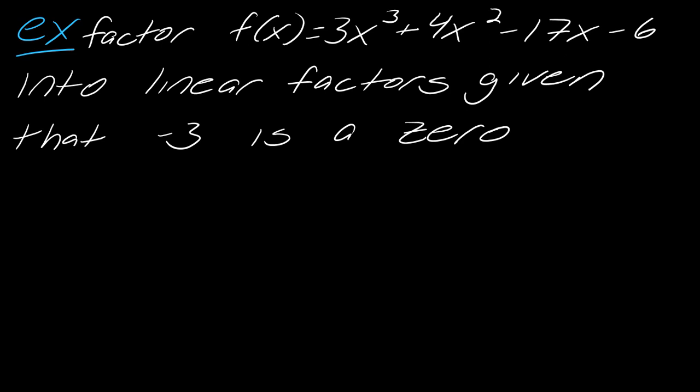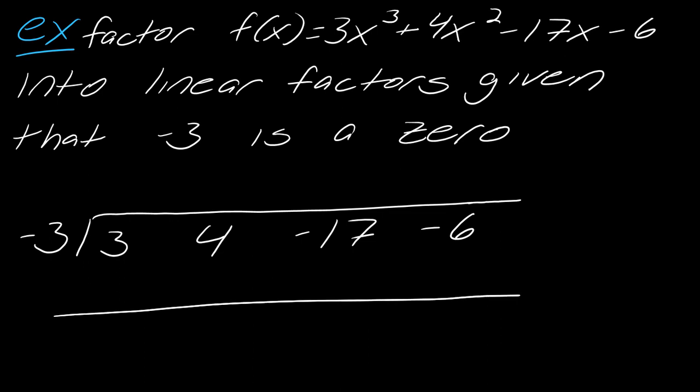Alright. So now I want to keep going with this idea. So I've got, I want to factor 3x cubed plus 4x squared minus 17x minus 6. So I want to factor this into linear factors, given that negative 3 is a 0. So I know that negative 3 is a 0, so I can set up the synthetic division. And so my polynomial, I have 3, 4, negative 17, and negative 6. So just taking the coefficients off of my f(x) up here.